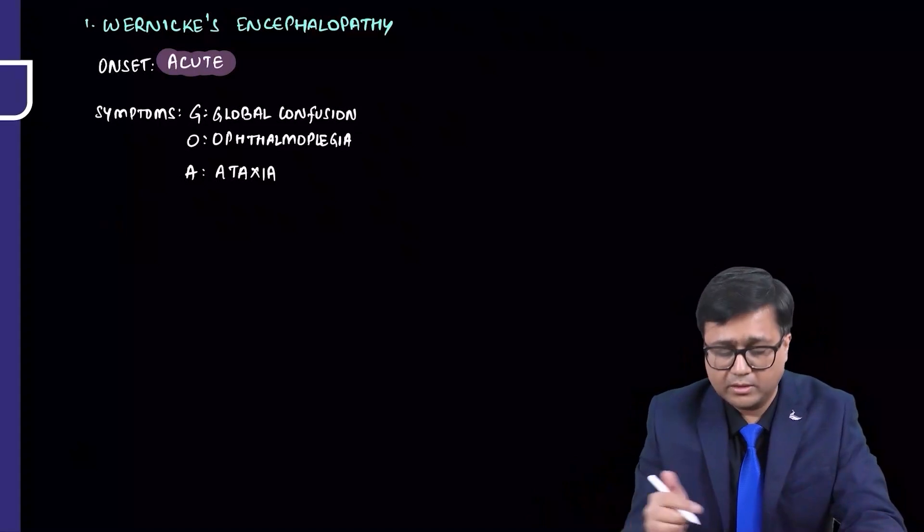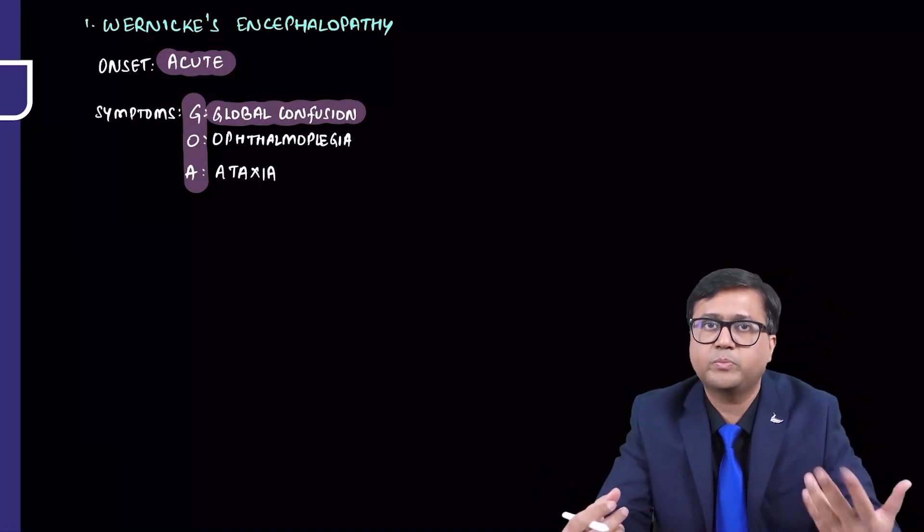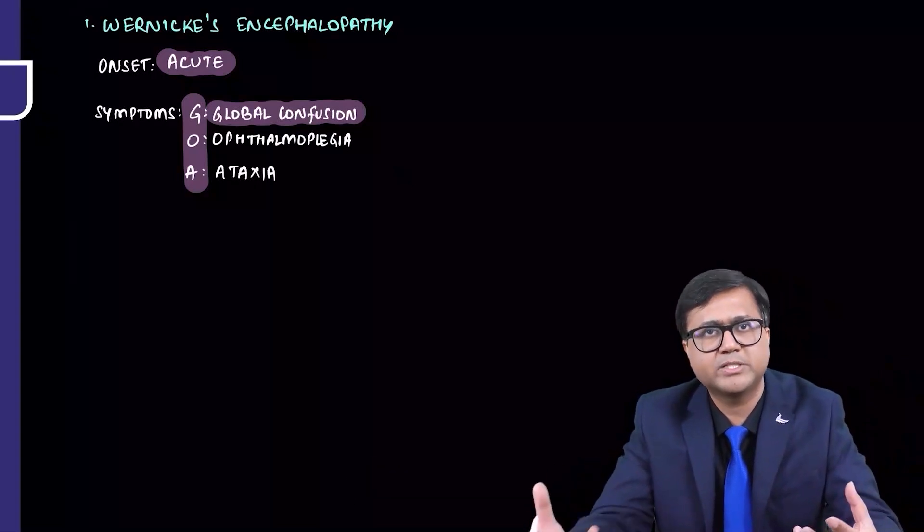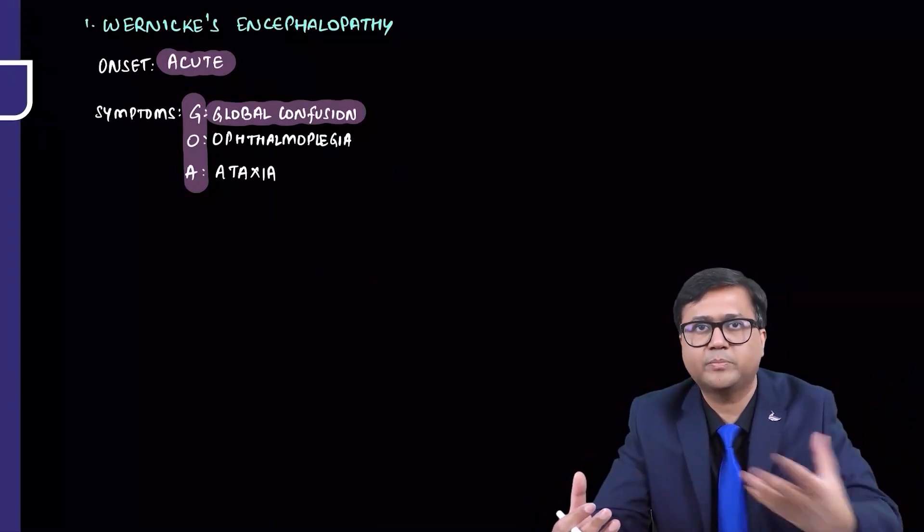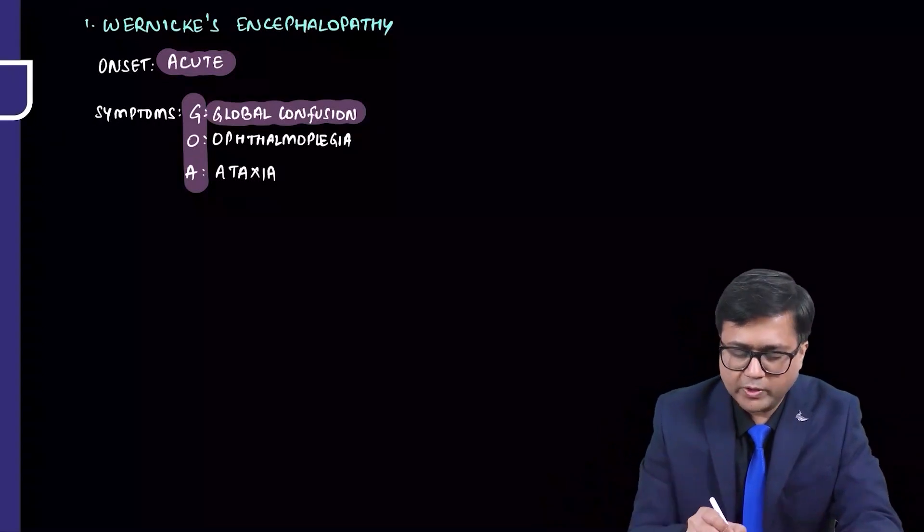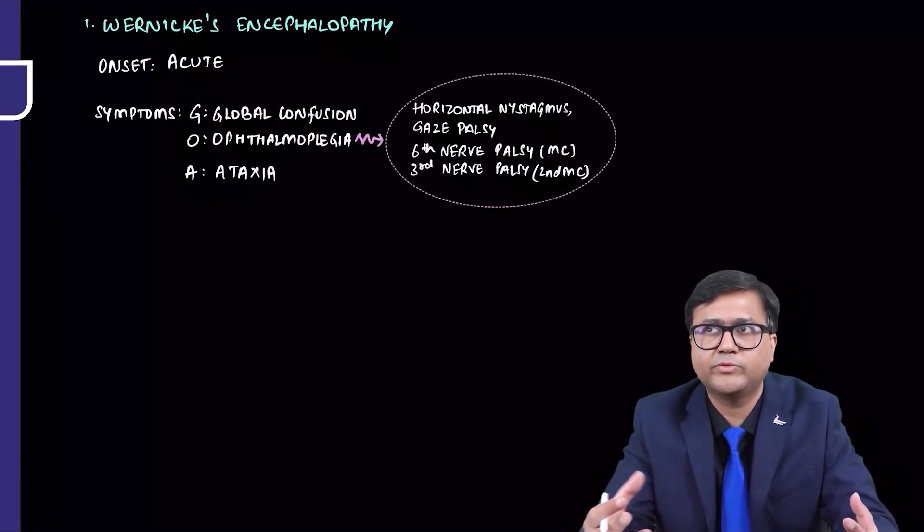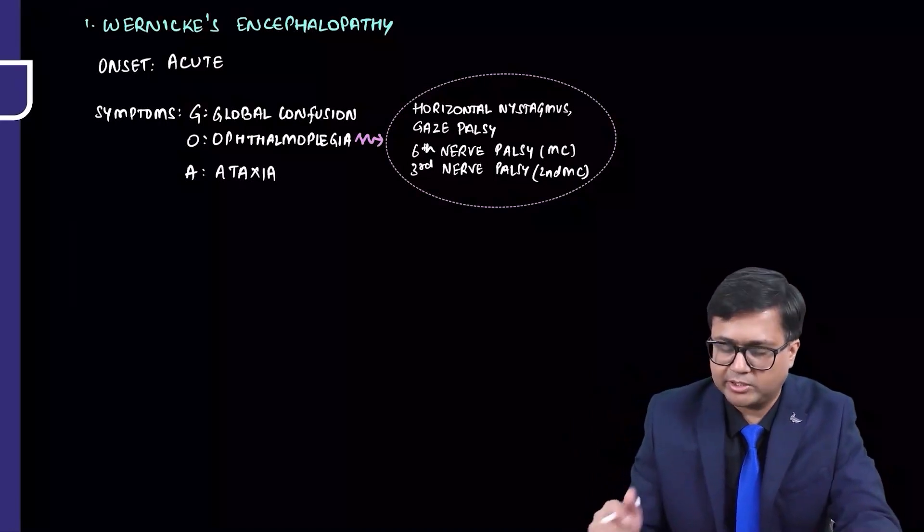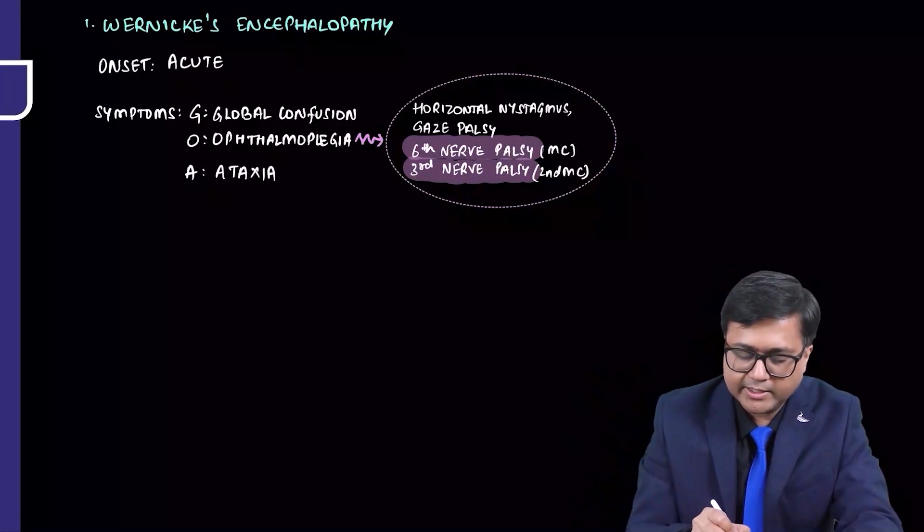The symptoms you can remember with the mnemonic GOA. G stands for global confusion. Person appears to be in a confused state. Please remember even in delirium tremens, there may be confusion seen, but that along with other symptoms of withdrawal will be there, and delirium tremens occur in withdrawal state. Patient would have stopped taking alcohol and then those symptoms would have developed. While Wernicke's encephalopathy may occur despite the patient is continuously taking alcohol. O is ophthalmoplegia. Patient may present with horizontal nystagmus or there may be gaze palsy. Patient may come with deviated eyes, not able to move his eyes. It is seen that sixth nerve palsy is most common and third nerve palsy is second most common.